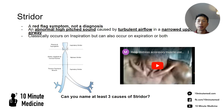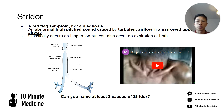Classically we learn this as occurring on inspiration, but as you can see from the diagram on the left, it really depends on where it is in the upper airway. From the glottis and the sub-glottis down, this could present as a biphasic stridor — occurring on both inspiration and expiration.